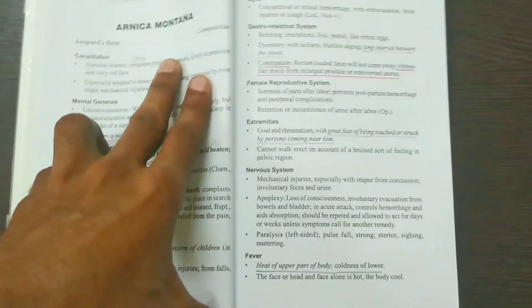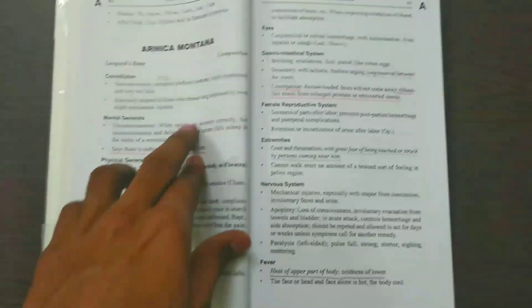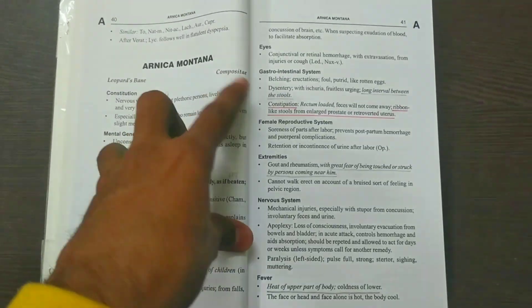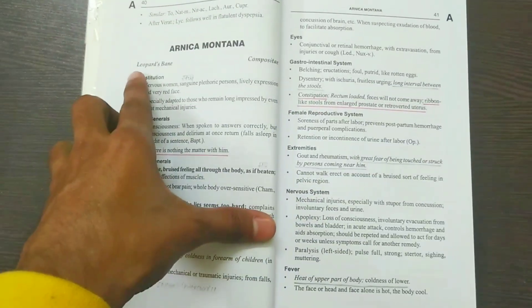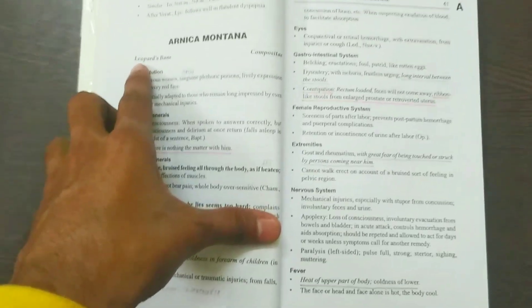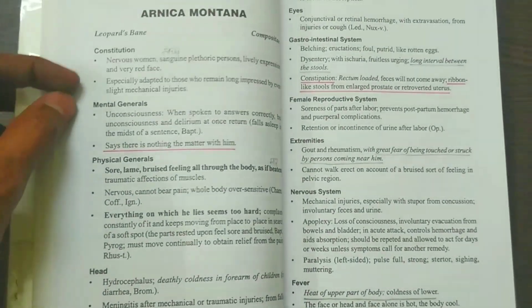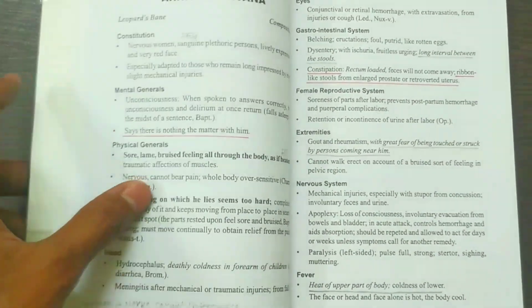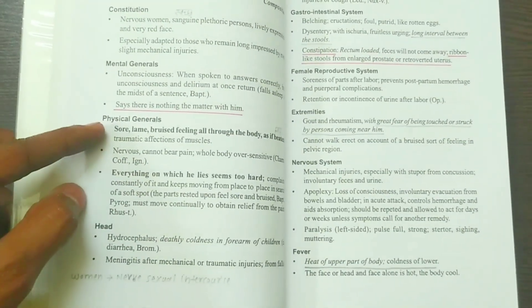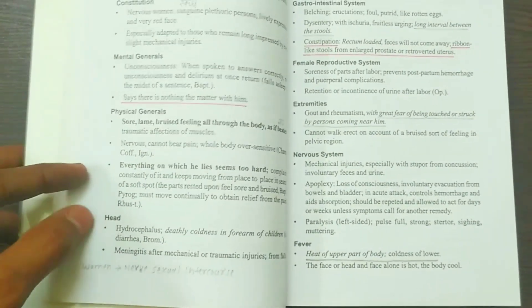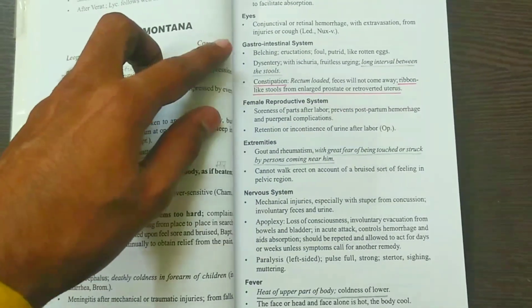On the right side is the family name, on the left side is the common name. Below that we see constitution, mental generals, physical generals, and particulars. Particulars include head, eyes, gastrointestinal system, female reproductive, extremities, nervous system.